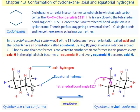involving rotations around the C-C bonds, one chair conformer is converted to another chair conformer. In this process, every axial hydrogen in the original chair becomes an equatorial hydrogen and every equatorial hydrogen becomes an axial hydrogen.